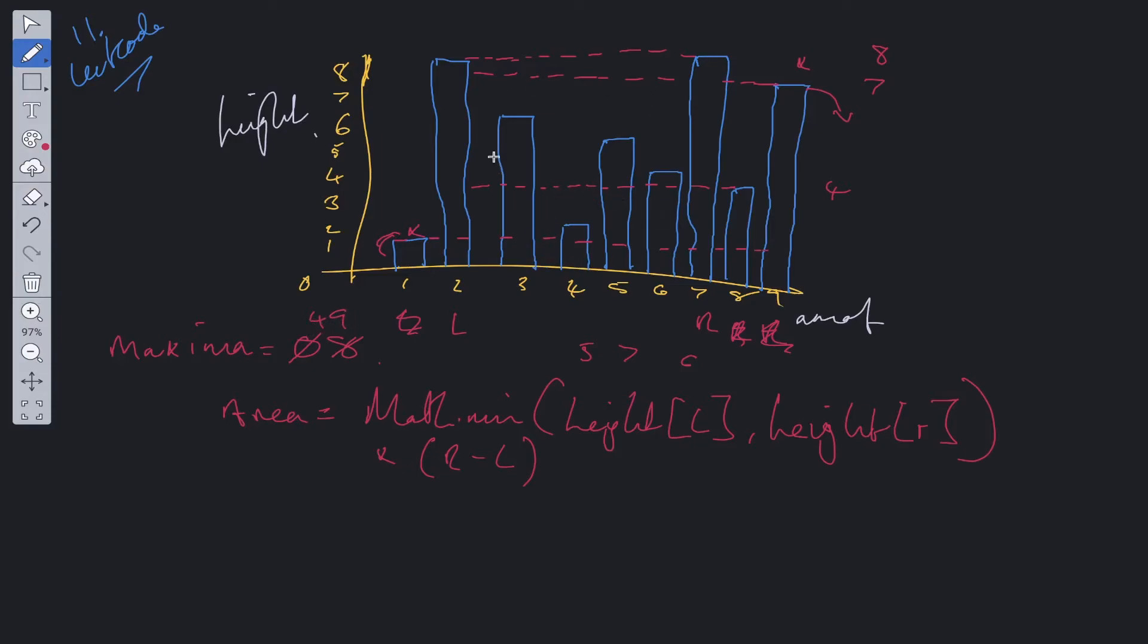As you can see there isn't going to be another area that is greater than 49. So at the end we will be returning maxima. That's the general idea of how to calculate this. Let's jump into the code and see how it's implemented.